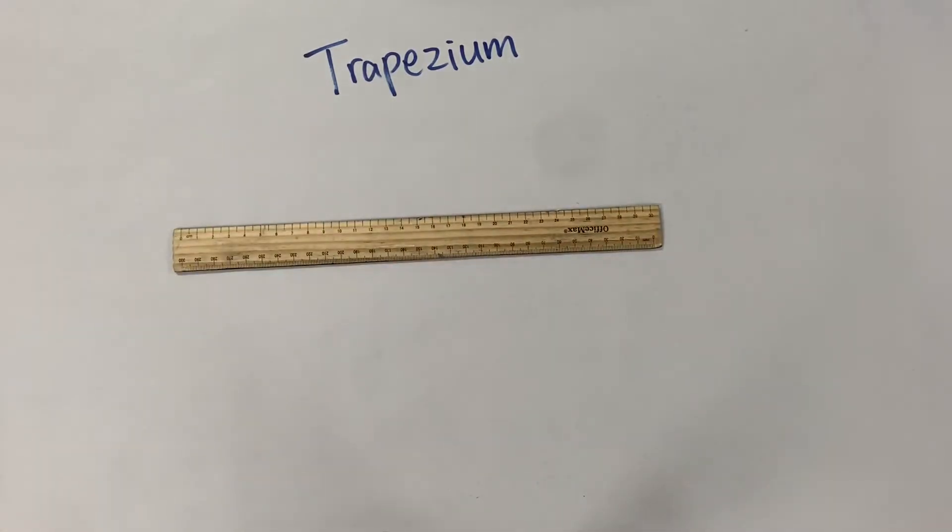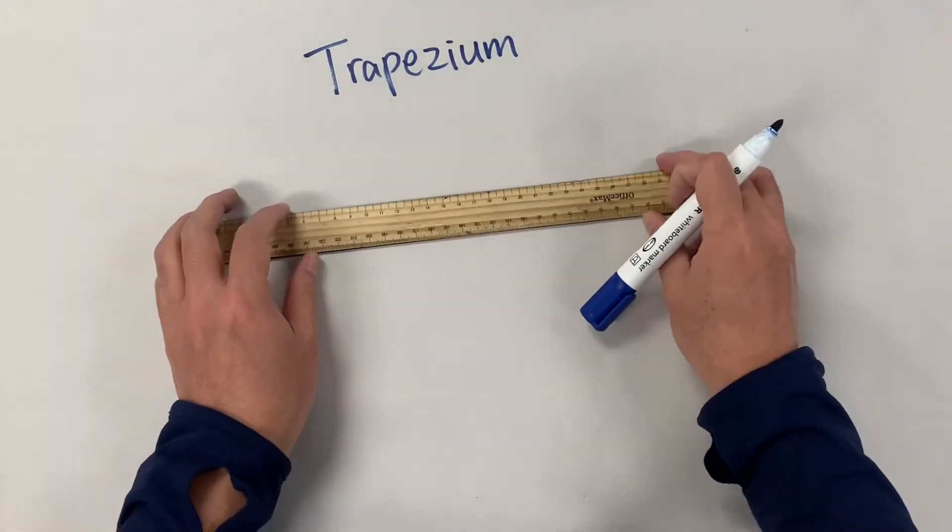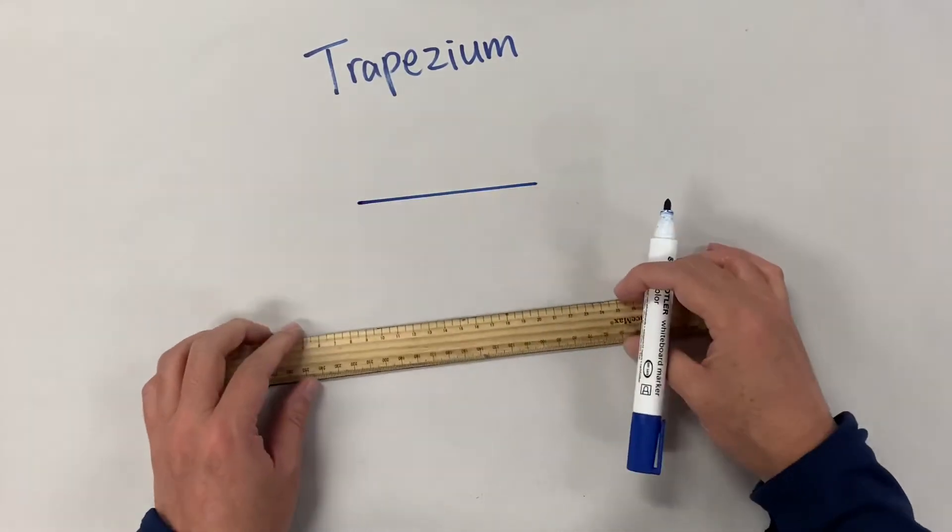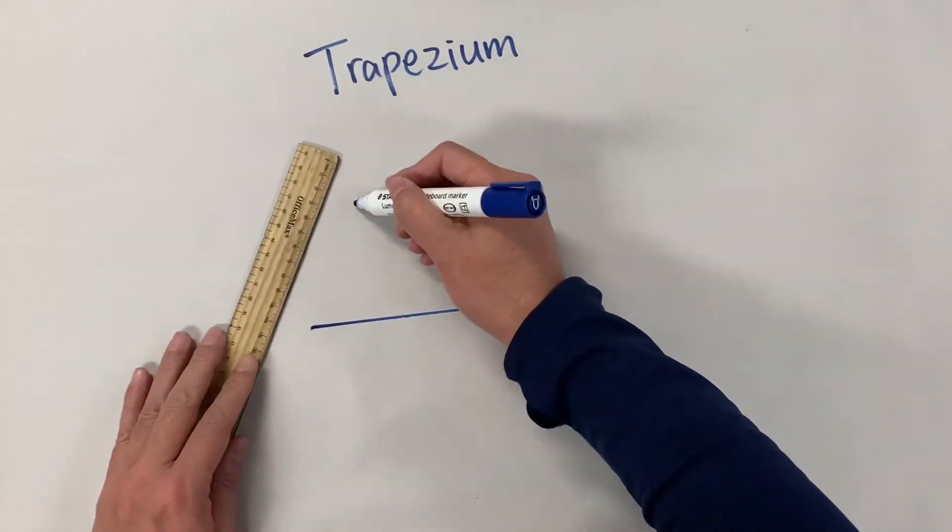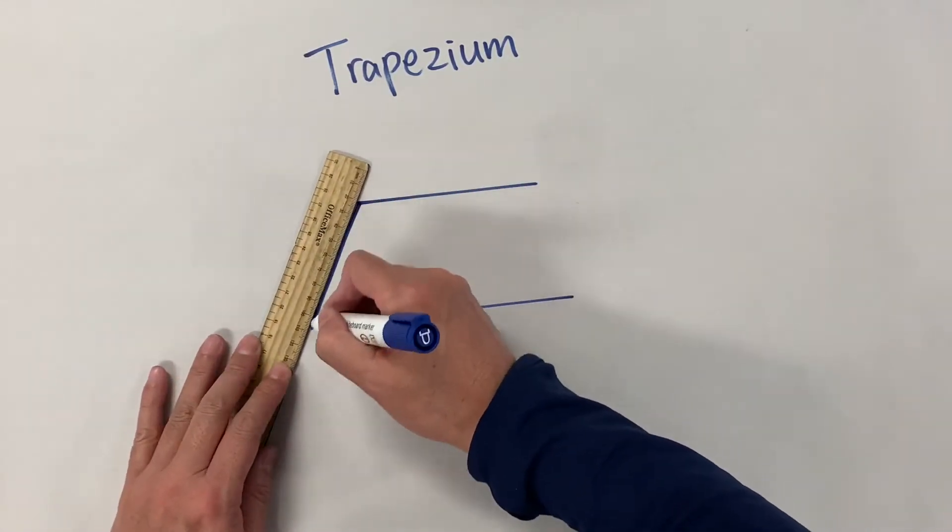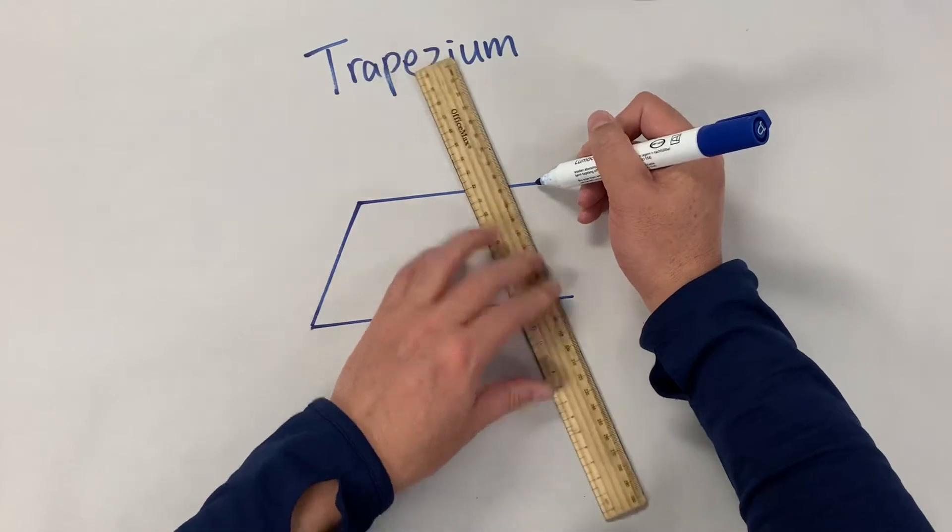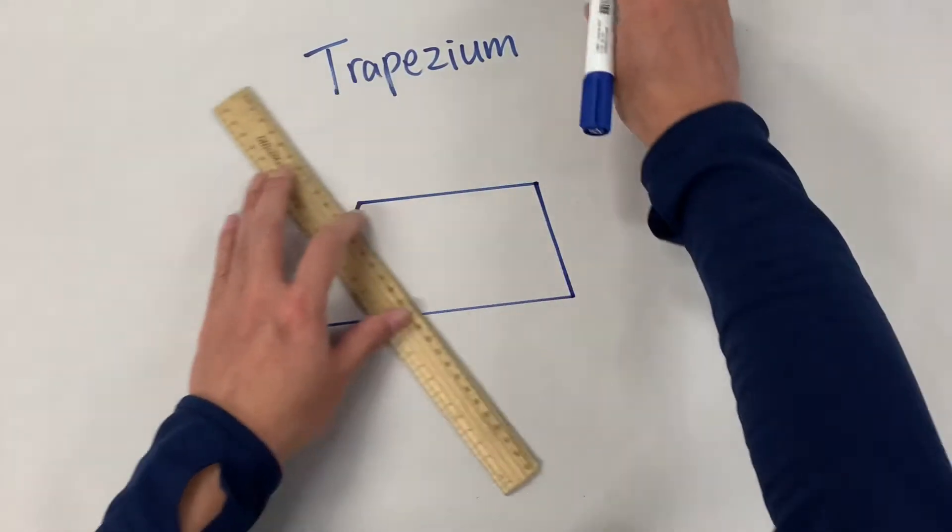I'll quickly show you what it looks like because it's important that you have a good idea of what it usually looks like. So this is a trapezium.